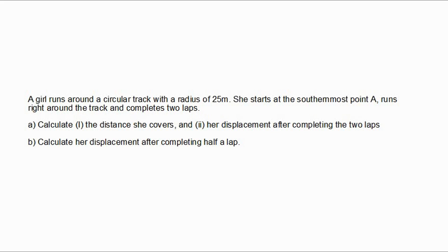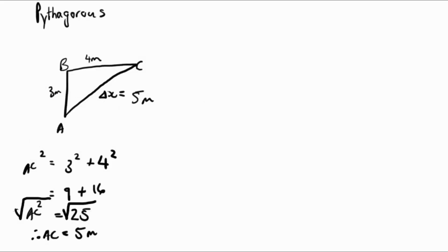Let's read the question together. A girl runs around a circular track with a radius of 25 meters. She starts at the southernmost point A, runs right around the track, and completes two laps. Part A asks us to calculate: one, the distance she covers, and two, her displacement after the two laps. Part B asks us to calculate her displacement after completing half a lap. Let's go do that — let's start by solving A.